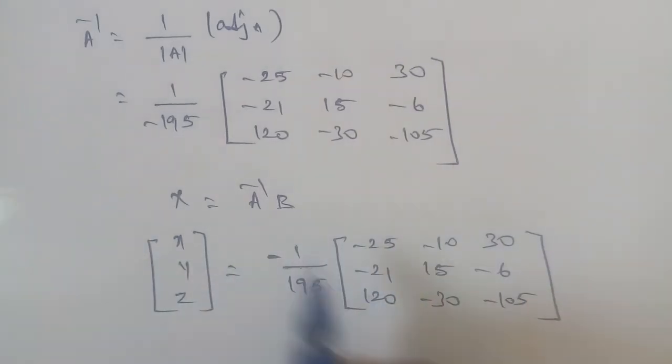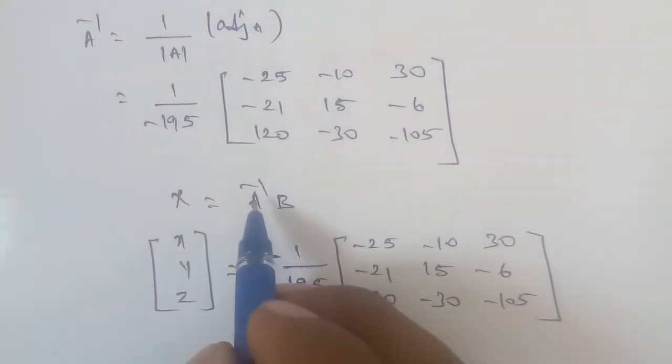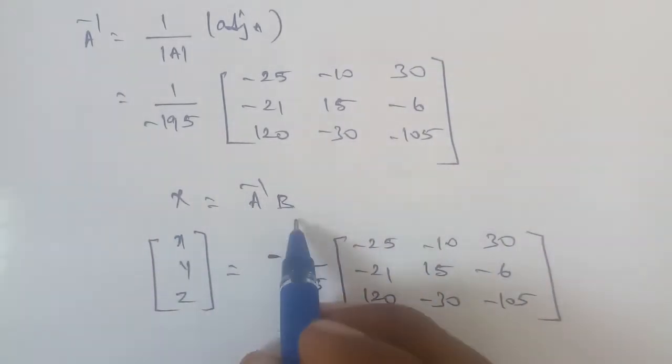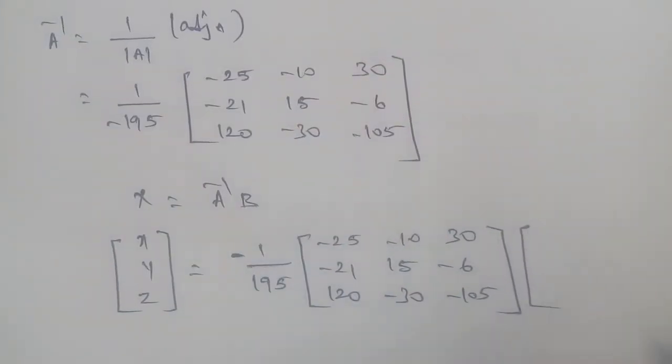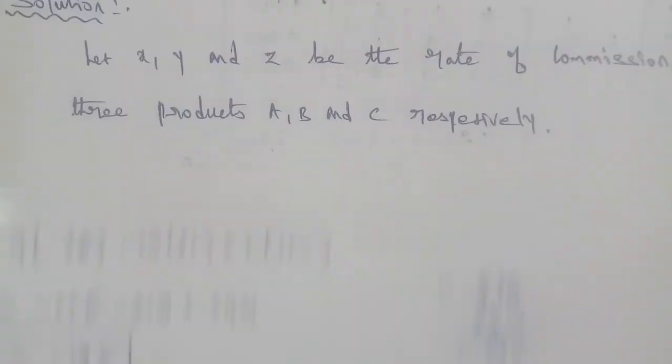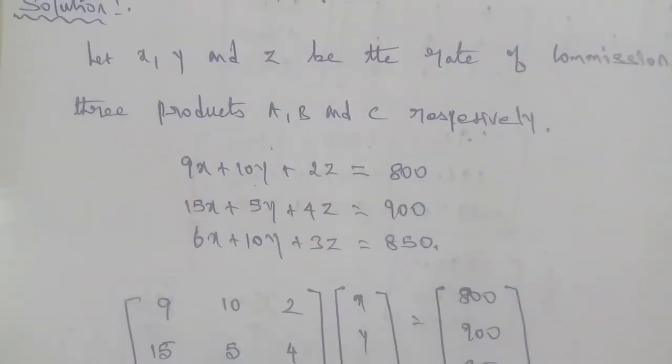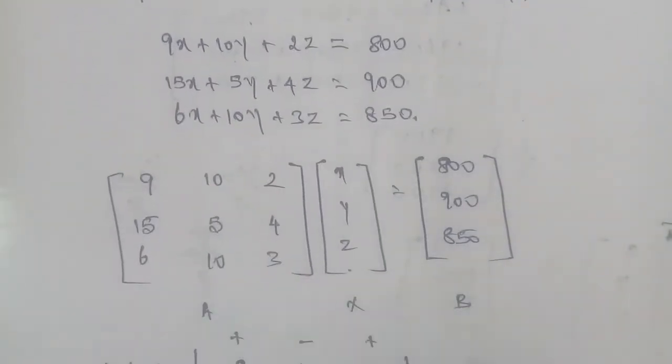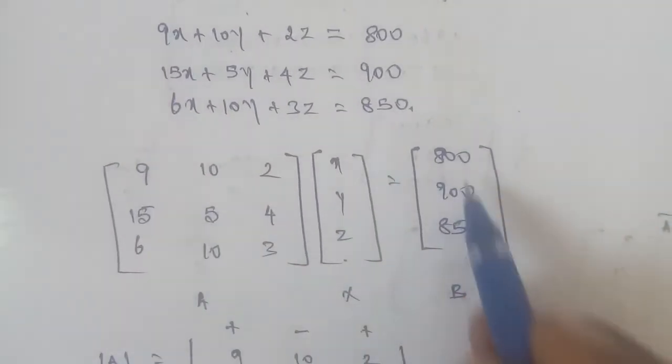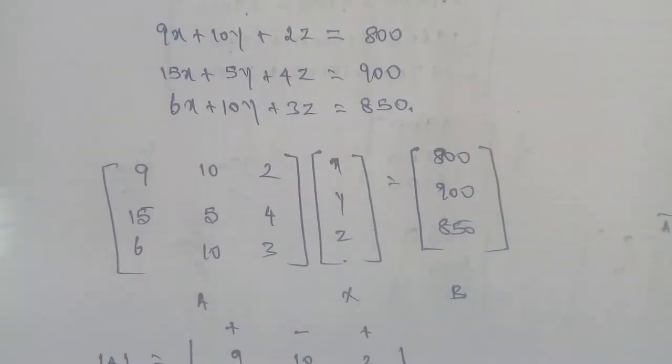Using the matrix inverse method formula x equals A inverse into B: x, y, z equals A inverse multiplied by B. The B matrix is equal to [800, 900, 850]. We now perform the row by column multiplication of A inverse into B.